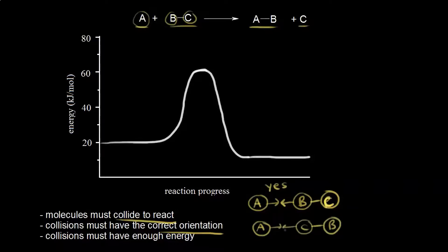If the diatomic molecule BC approaches in the opposite direction — with atom C approaching atom A — this is not the proper orientation for the reaction to occur. So there has to be a collision, the collision has to be in the proper orientation, and finally collisions must have enough energy. If the collision doesn't have enough energy, the atom and molecule will just bounce off of each other.